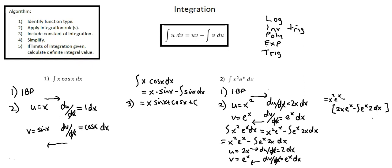And now the integral we're working with is e to the power of x times not a function, but a constant — the integral of 2 e to the power of x. Further simplifying: equals x squared times e to the power of x, minus 2x e to the power of x, minus minus — distributing the negative.